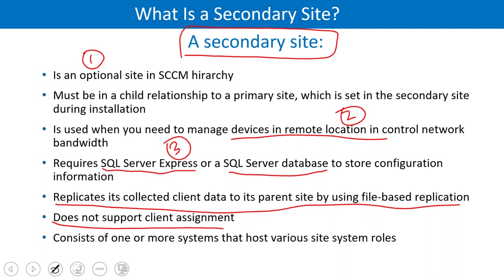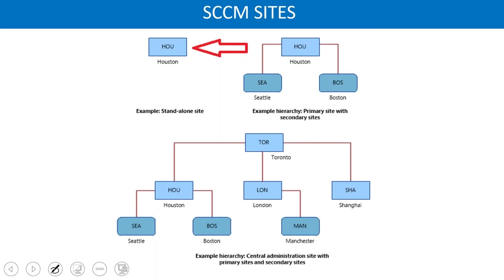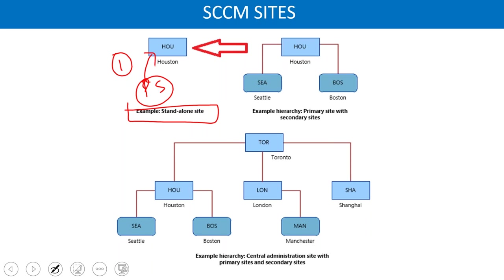The secondary site replicates its data to the primary site database, and it does not support client assignment — all clients are always assigned to the primary site, not the secondary. These are the hierarchy diagrams: the first is for small offices with one location, one primary site handling all local LAN computers.